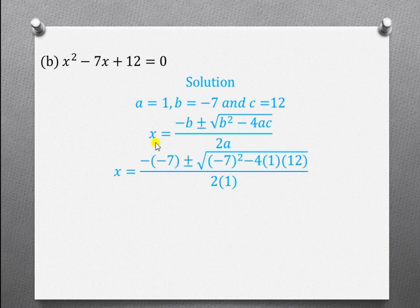So, wherever there is A, I'll put 1. Wherever there is B, I'll put negative 7. And wherever there is C, I'll put 12. That is why I have negative, which is in the formula, into negative 7 in brackets. Plus or negative square root. B is again negative 7. I've substituted, but you square it with a bracket. And minus 4 into 1. Our A is 1 and C is 12. Divide by 2 multiplied by 1.